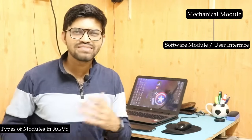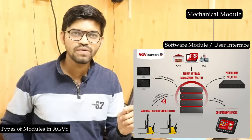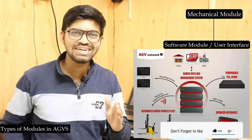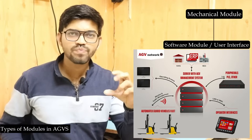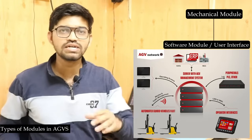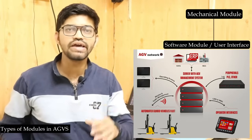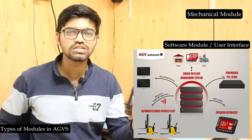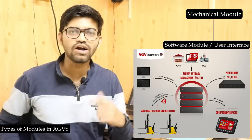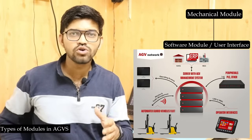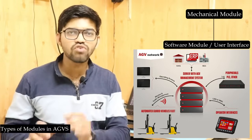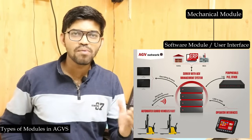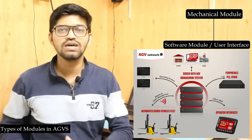The next module is the software module, also called the user interface or host software. This host software enables the AGV to set its path, location, acceleration, deceleration, and how long it will take to carry a particular load from one location to another. It calculates distance, time taken, and efficiency — for example, how many trips are completed in 24 or 12 hours. It also allows an operator to remotely operate and monitor all AGVs, and track different materials located at different sections in warehousing.